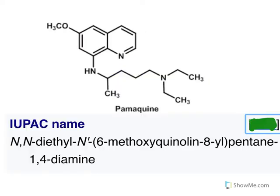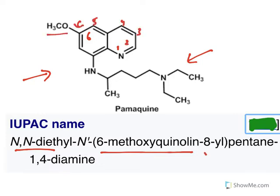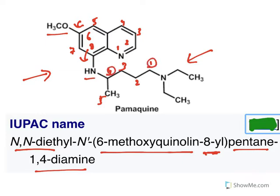Palmaquine is an 8-aminoquinoline derivative. Its IUPAC name is N,N-diethyl — on the nitrogen you have two ethyl groups — and 6-methoxyquinoline, meaning at the sixth position a methoxy group is attached. At the eighth position there is a substitution, and it is called a pentane-1,4-diamine — at the first carbon and fourth carbon you have two amine substitutions. This is palmaquine.